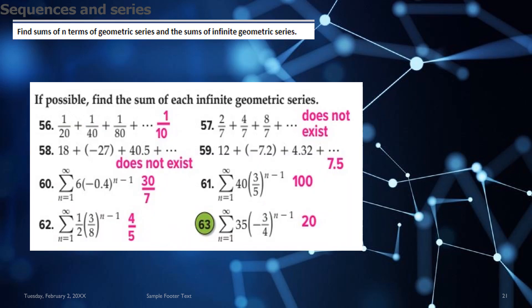Then we have sum of n terms of geometric series and sum of infinite geometric series. So you see here for question 56 to 63, the following solutions given in pink. Some of them do not exist and for some the value is given to you.